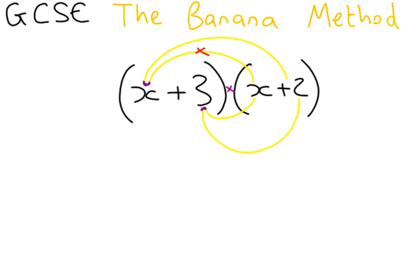For each line on this banana you are going to multiply. The first line we are going to multiply is this one, x times x. x times x is x squared.